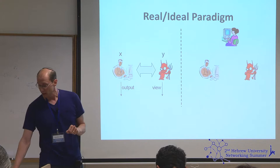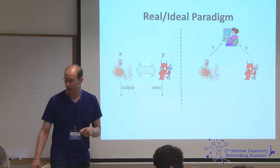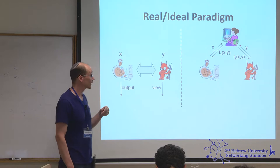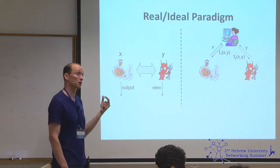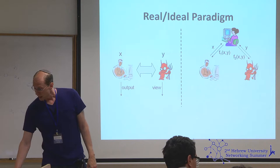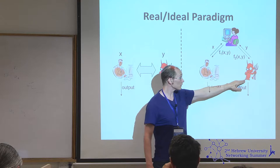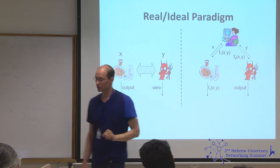In the ideal world, they send their inputs to that trusted party — the honest party sending its own input, the malicious party sending whatever input it likes. The trusted party computes f1 and returns it to the party on the left, and computes f2 over the same inputs and returns it to the party on the right. The honest party outputs f1, and the attacker outputs some arbitrary function of what it received from the trusted third party.